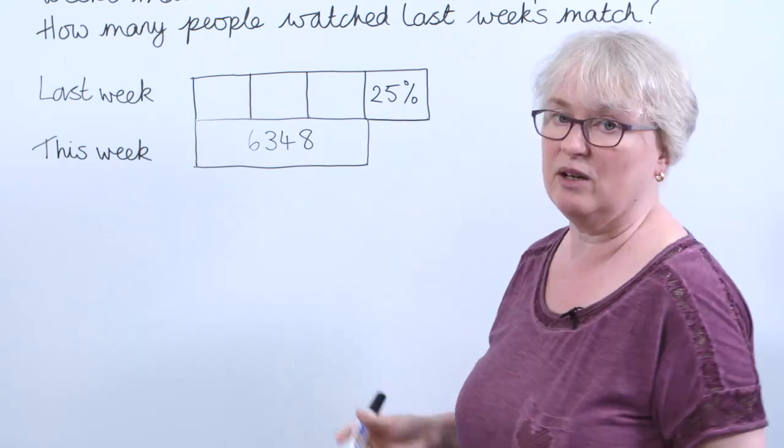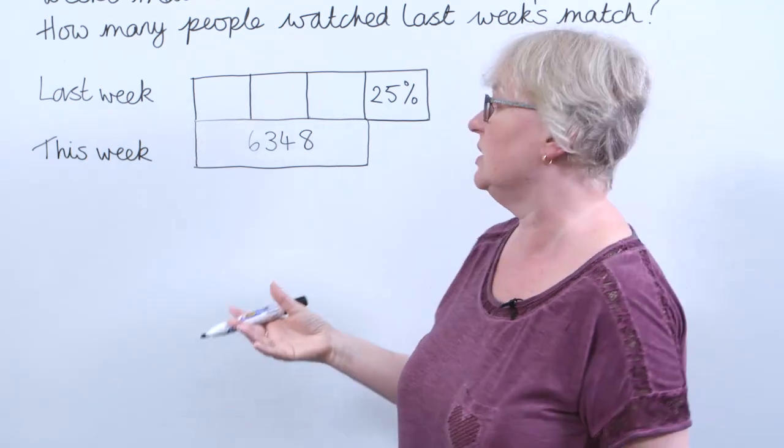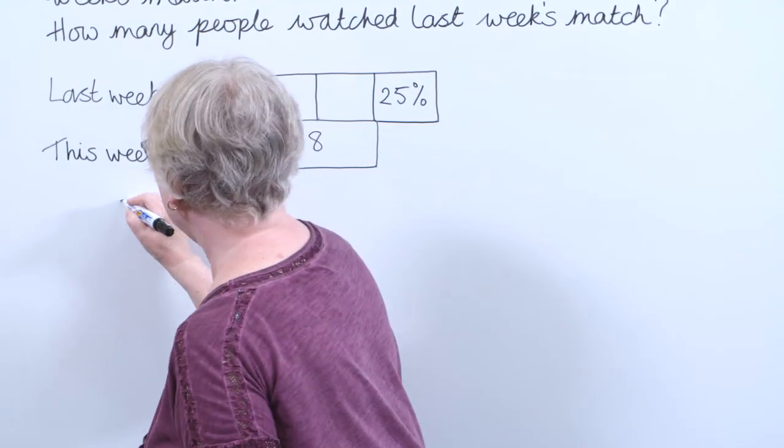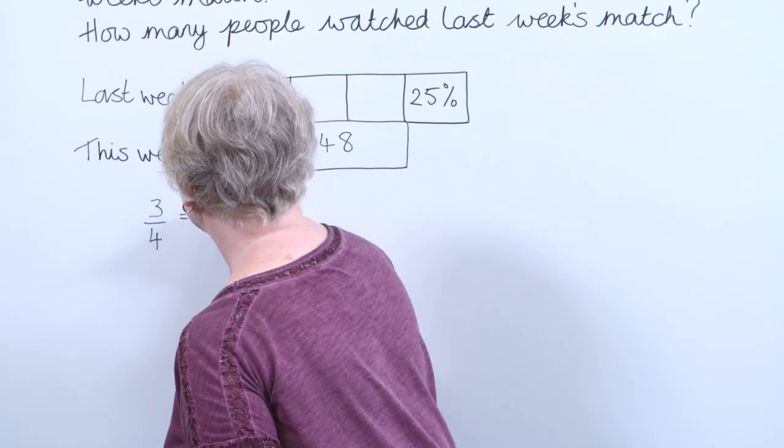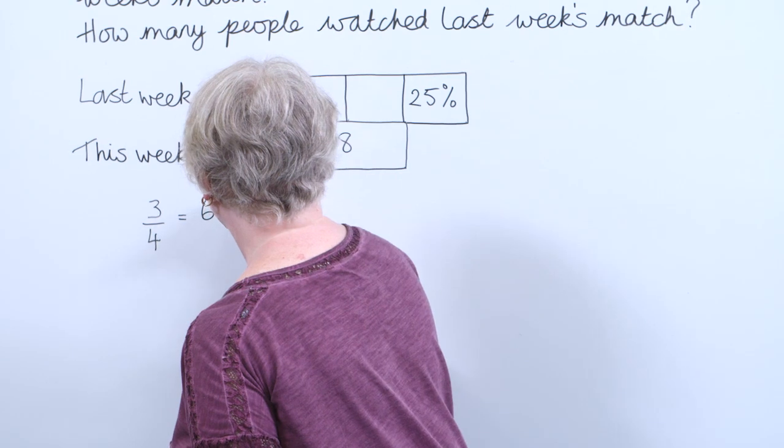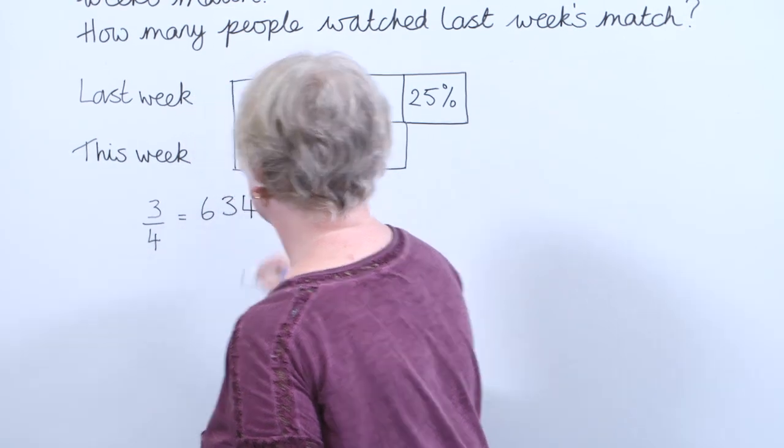Because 25% obviously is the same as a quarter. So I've got three quarters of last week's fans is the same as 6,348 fans.